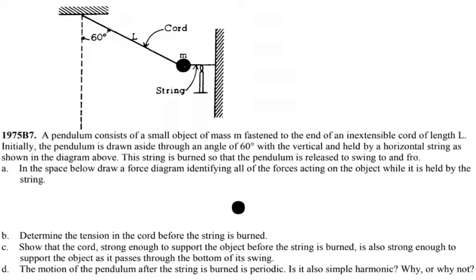Here is an AP question from 1975. The pendulum consists of a small object of mass m and the length of the cord is l. It is attached under an angle of 60 degrees.